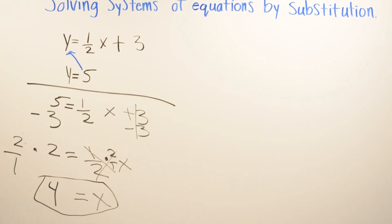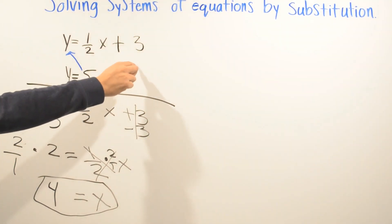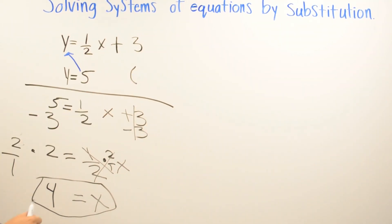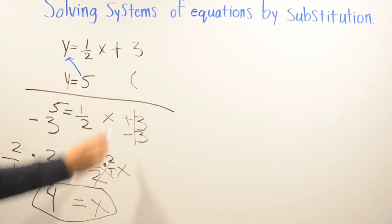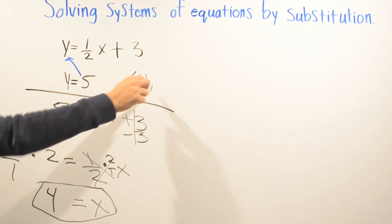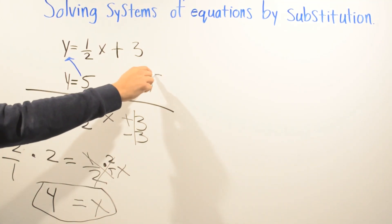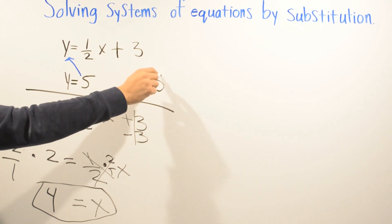So x equals four. When you write your answer, you put four for x, and we already have five for y, so the answer is (4, 5).